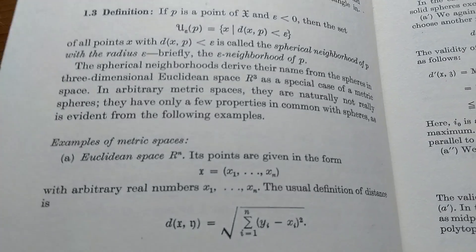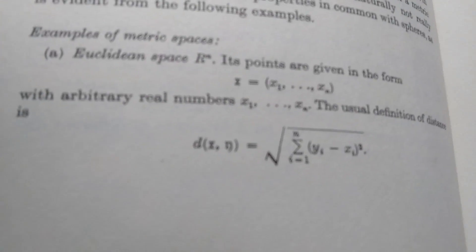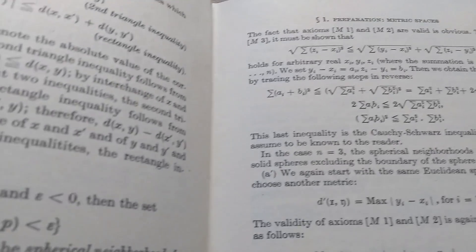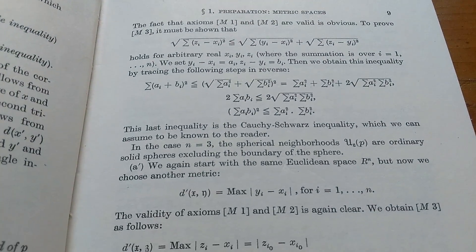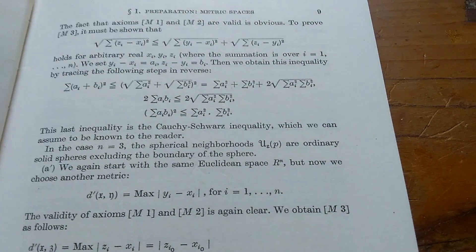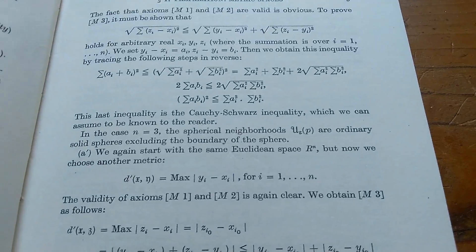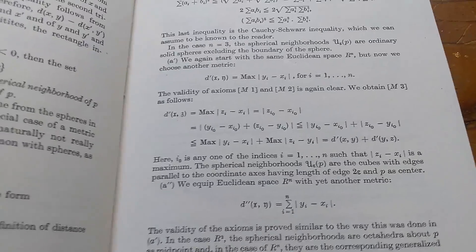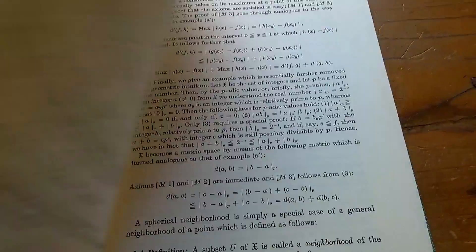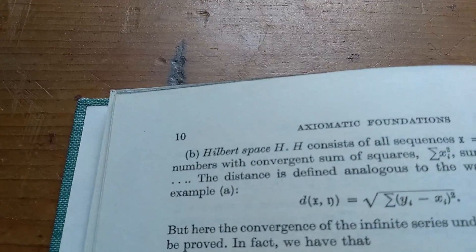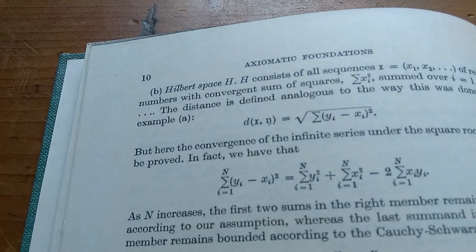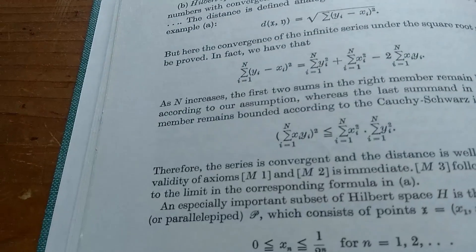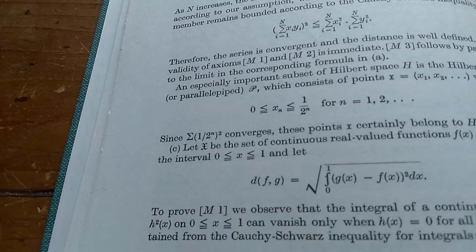He actually does give several examples of metric spaces. So he gives the Euclidean spaces as the first example, and he goes through the entire proof. He shows the Cauchy-Schwarz inequality, which can be assumed to be known to the reader. So it's a much more advanced book than you would expect. Let's turn the page. Then right away, example B is Hilbert space H. So I mean, this is page 10. This guy does not waste any time at all. This book is extremely hardcore.